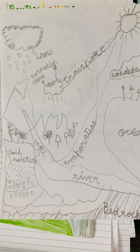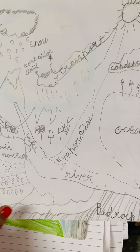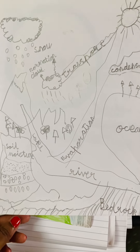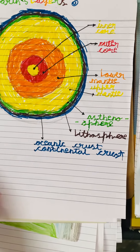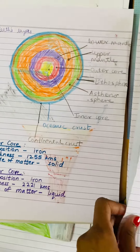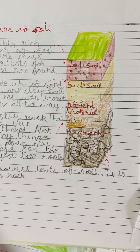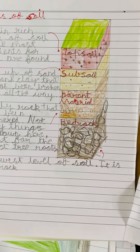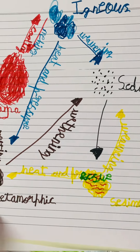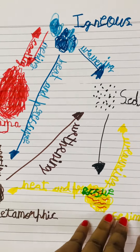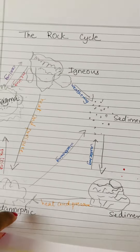So this is when he was really small — you can make out from the handwriting. The water cycle, then the layers of earth, and I think this is again layers of earth, layers of soil. So we're drawing demonstrations, we were studying the rocks — igneous and sedimentary — the rock cycle.